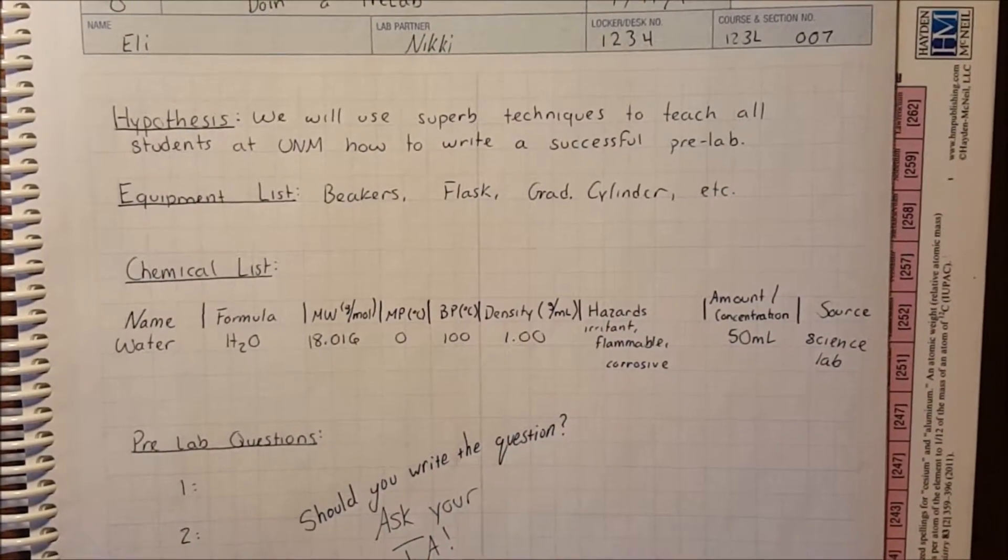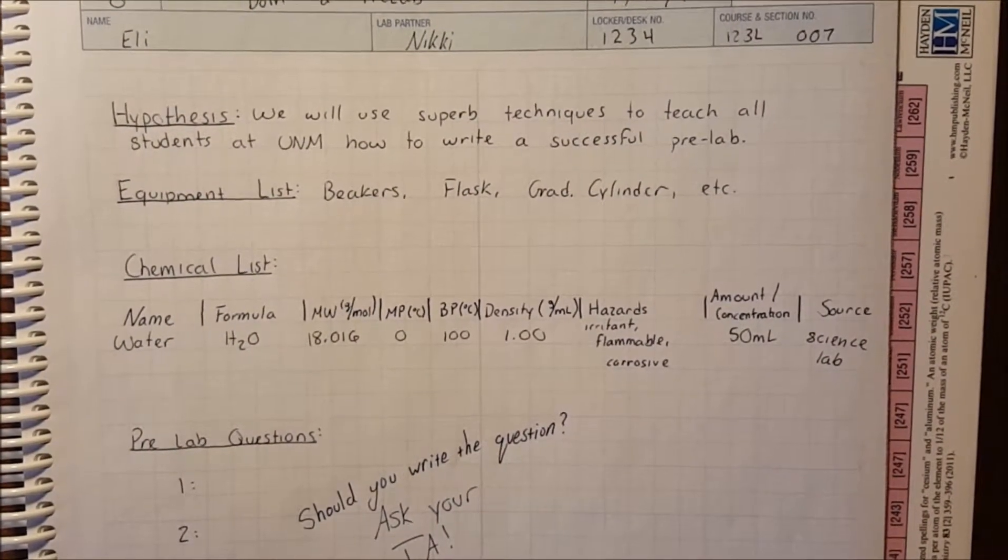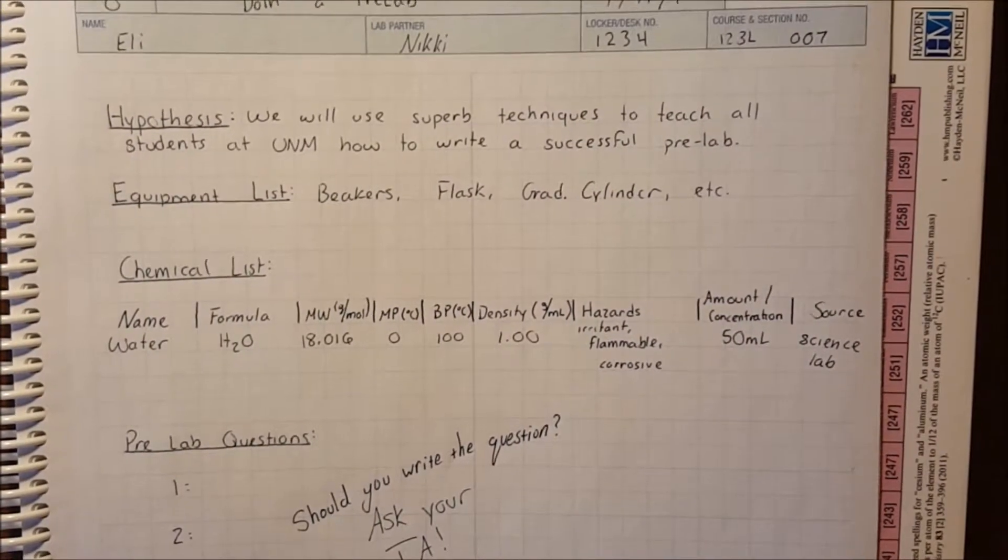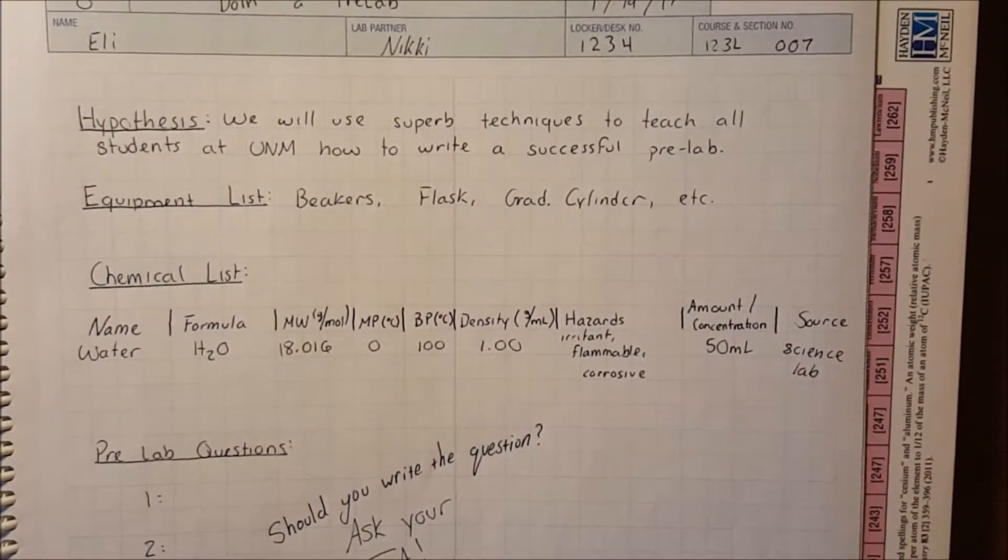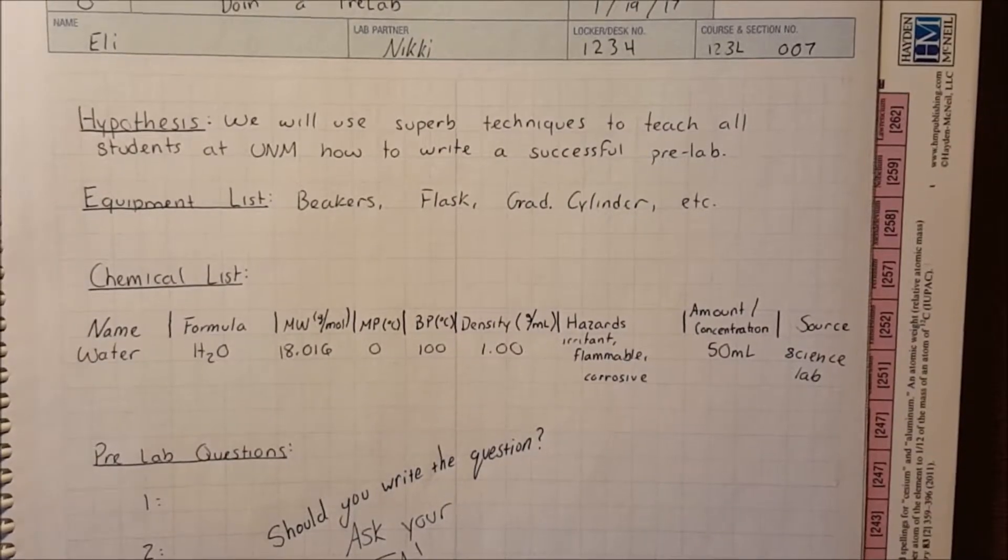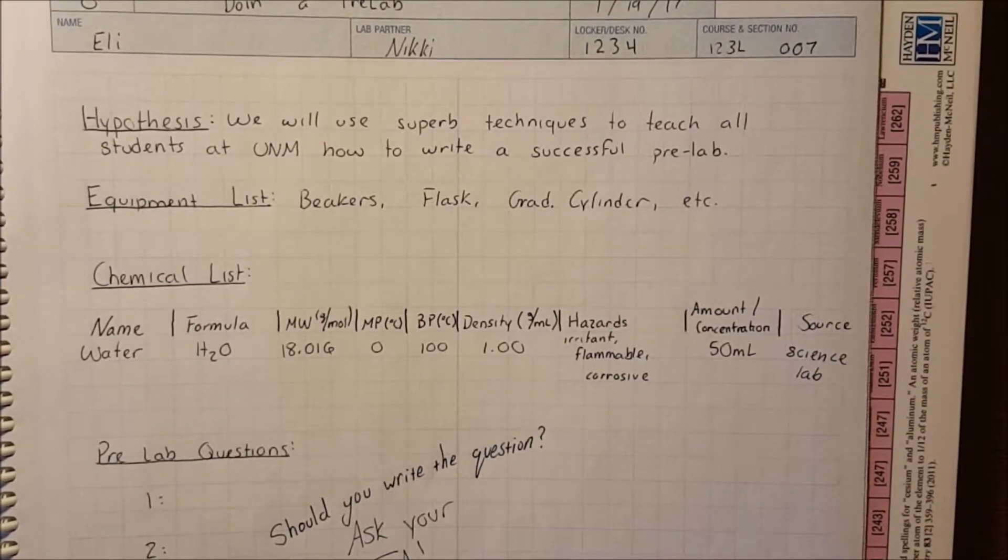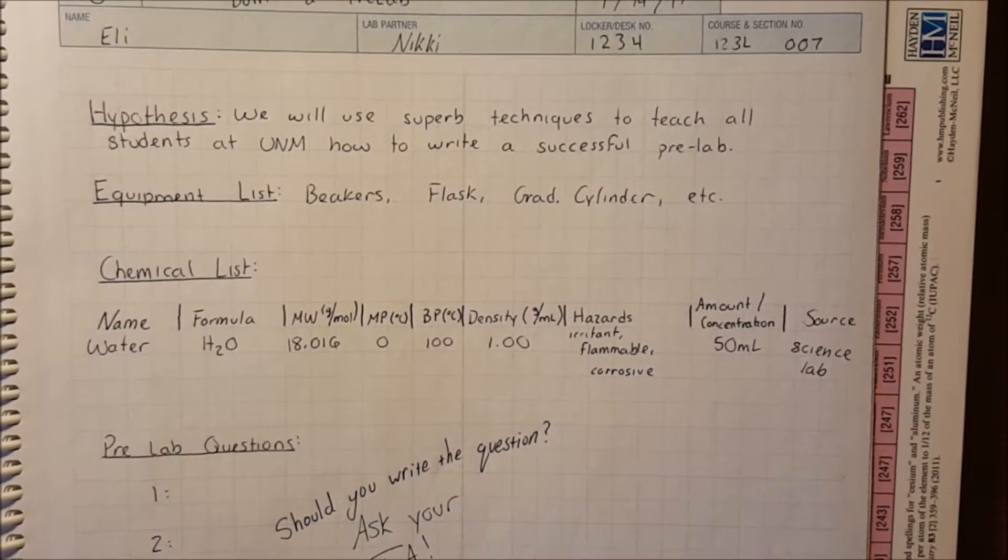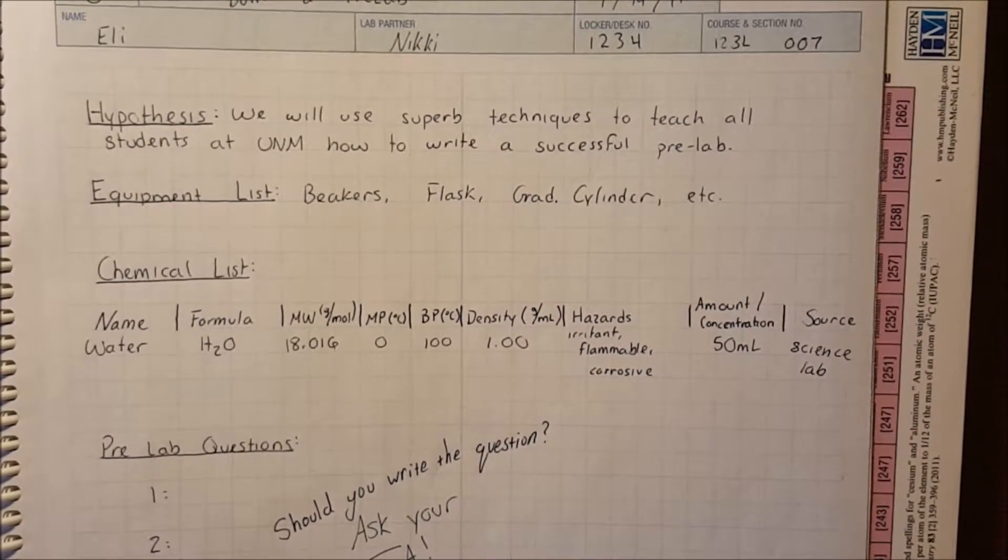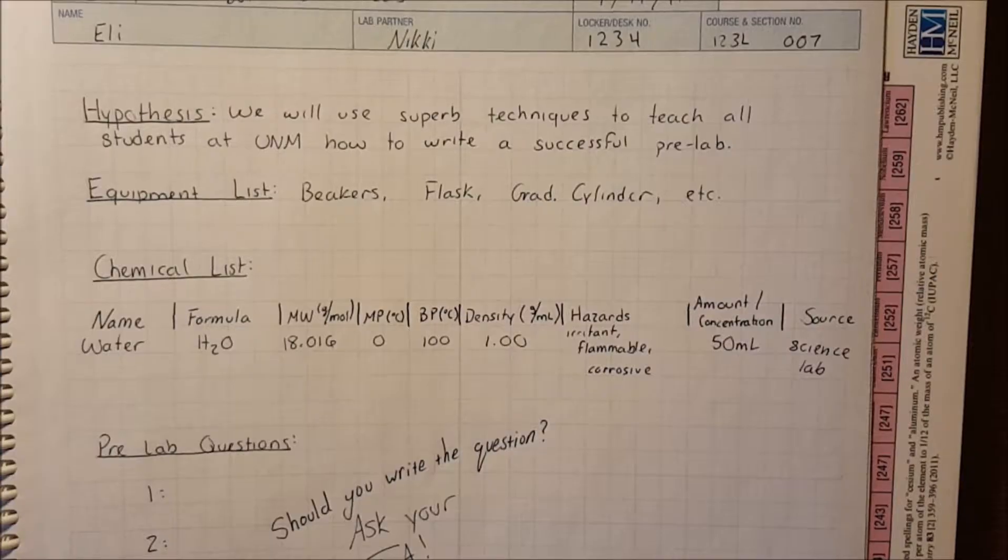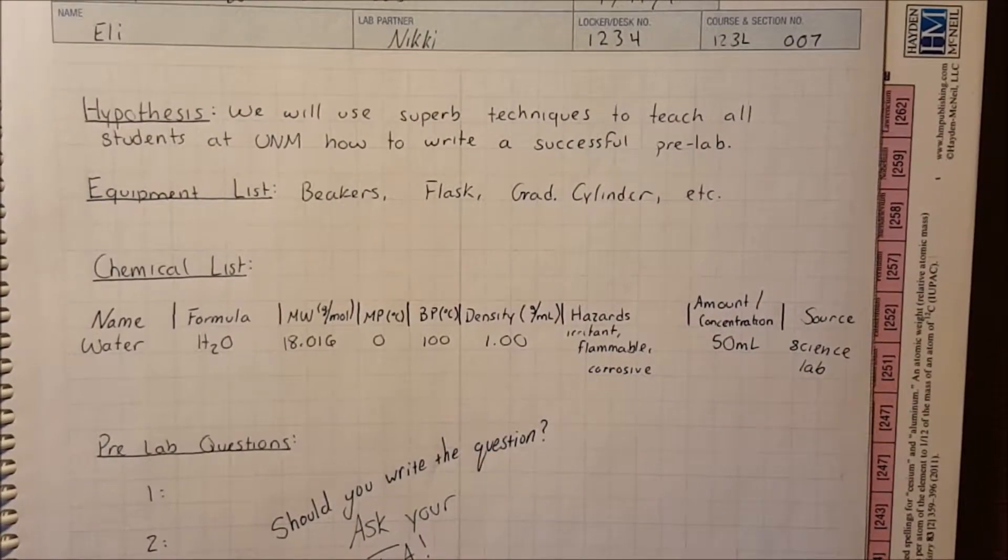Really, the more pieces of equipment that you think you're going to need, the more you should put in the equipment list. The next section is the chemical list. The chemicals you will use in this experiment are found in your lab manual. The table has many headings, so make sure to leave yourself enough space.